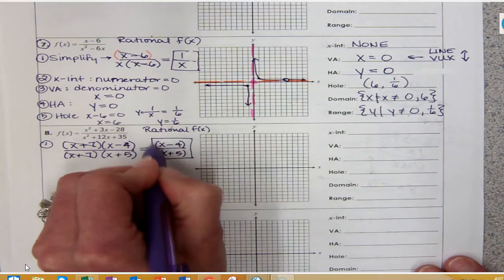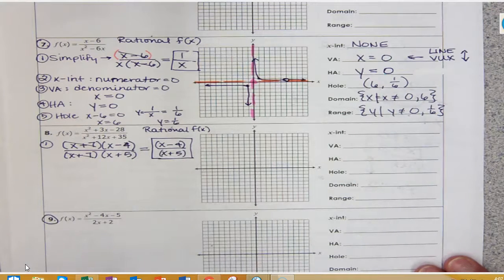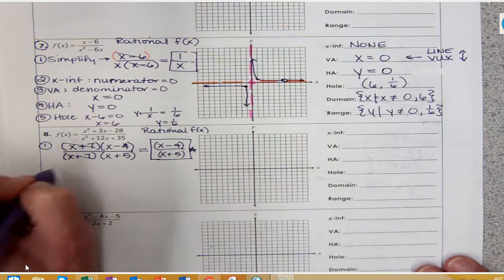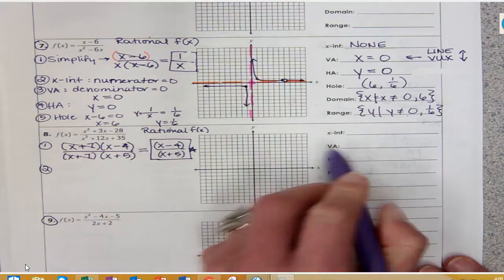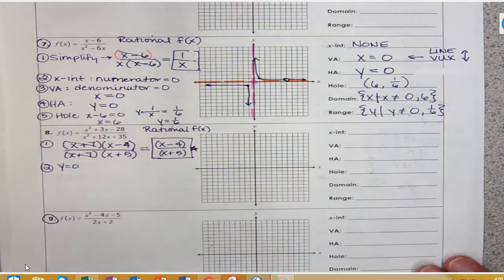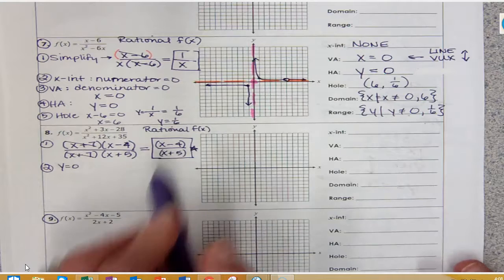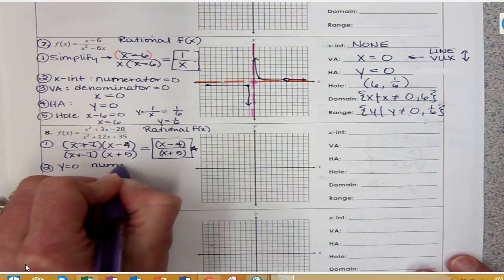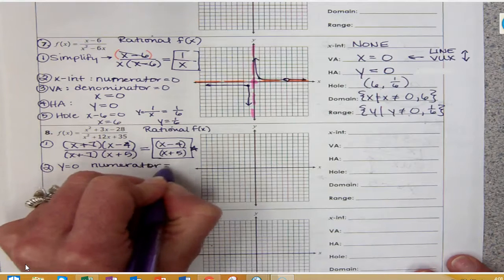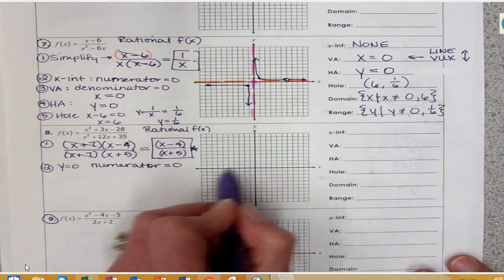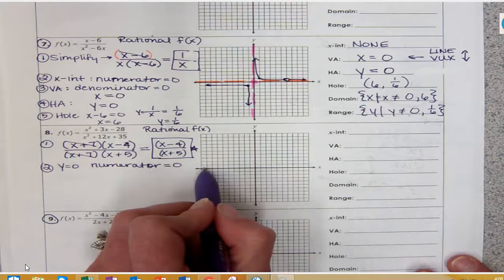When I add 7 and 5, I get 12. When I multiply 7 times 5, I get 35. So when I reduce those, since (x plus 7) over (x plus 7) cancels out to 1, I'm left with (x minus 4) over (x plus 5). This is my new simplified equation that I'm going to use to determine my answers.